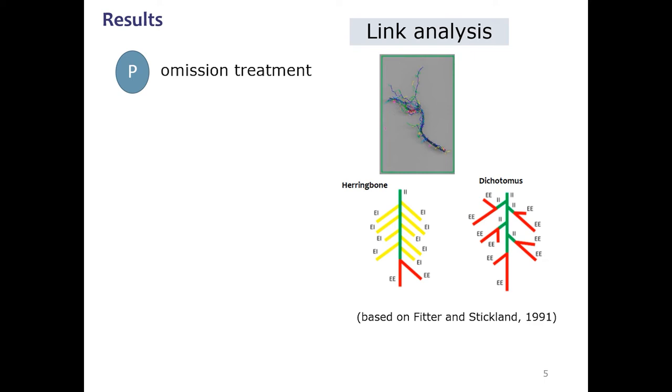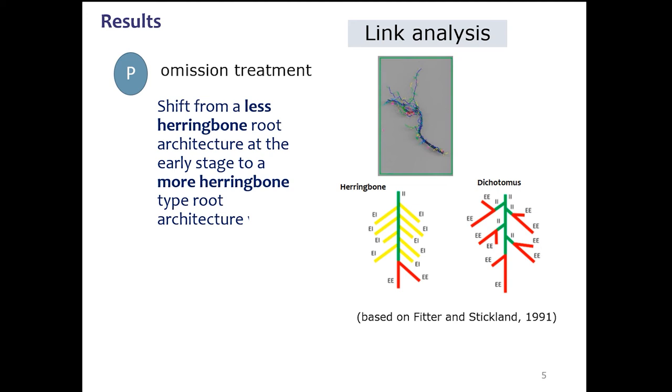The results of the root analysis in the phosphorus treatment, for example, showed a shift from less herringbone root architecture at the early stage to more herringbone type root architecture with more interior links in the late stage.